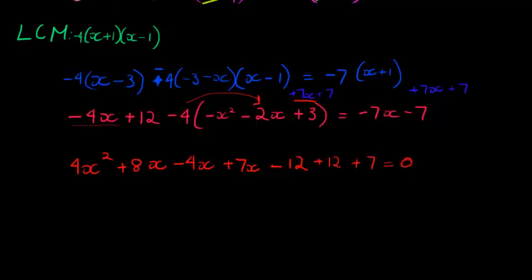Equal to zero. So now let's simplify what do we get. 4x² means the only square next to the power of 4. Then we've got 8x minus 4x gives me 4x plus 7x, this gives me plus 11x. And then finally I've got my constants which is -12 and +12, they just cancel one another. So I'm left with +7 equal to 0.